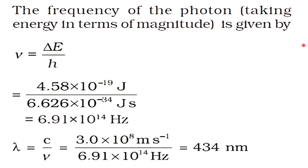So if we have the frequency, we can find the wavelength using lambda equal to c by nu, which is 3.0 into 10 raise to 8 meter per second divided by 6.91 into 10 raise to 14 hertz. The answer is 434 nm.